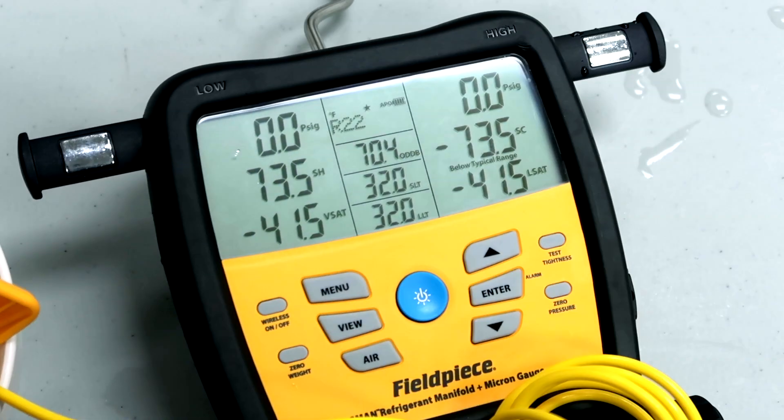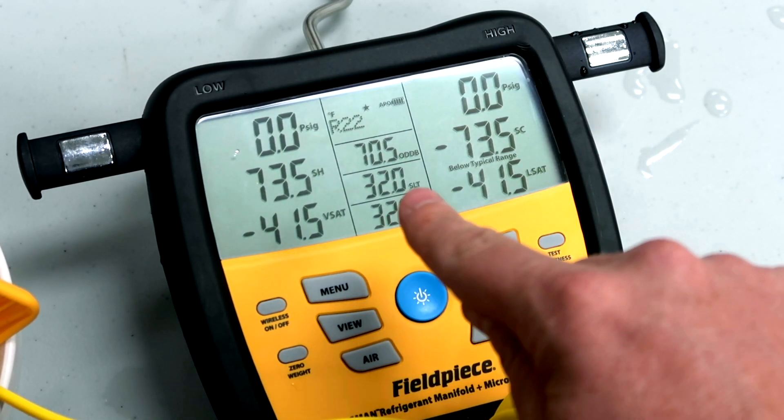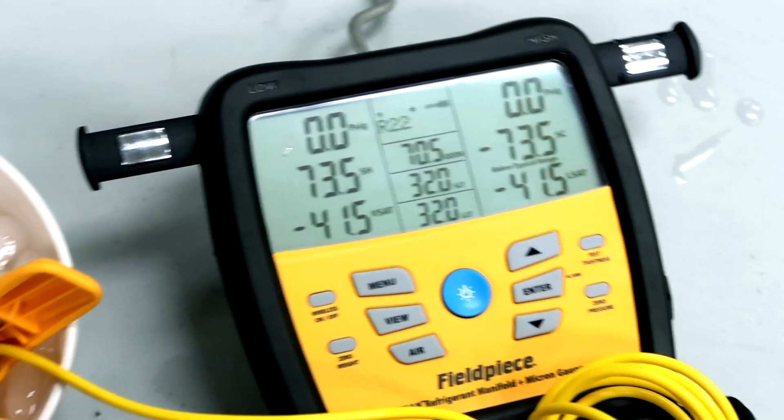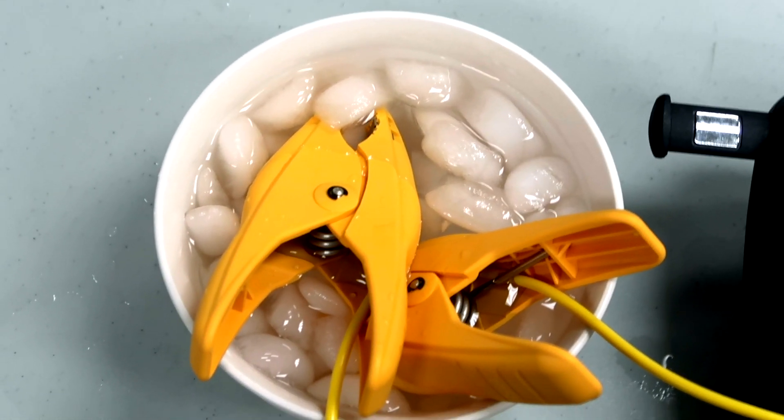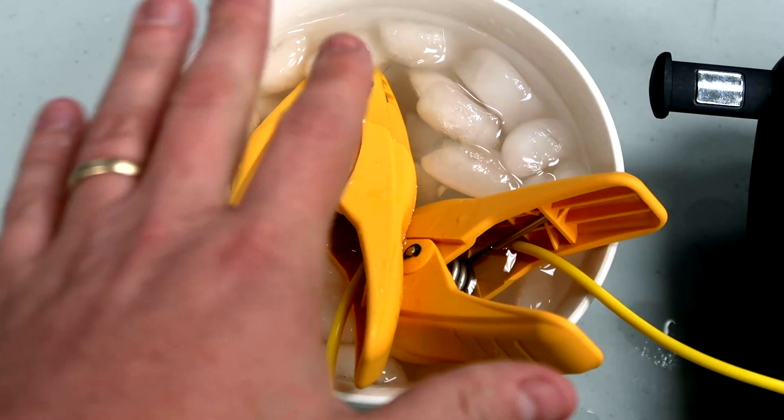When we're done, all we do is hit menu and that goes back to the beginning. Making sure that you're calibrated to a known temperature—in this case water at saturation when it's melting, 32 degrees—that's what we're calibrating to.